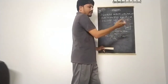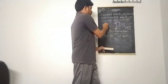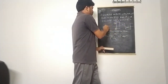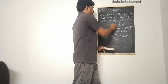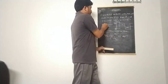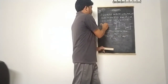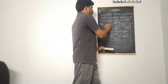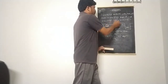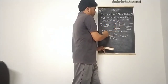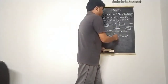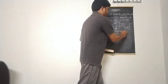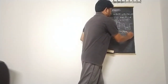When we have a bridge converter, the output VAB represents the AC system side. This is the converter output — a DC-to-AC conversion — and VAB is the AC voltage. We find the RMS value with respect to the peak value VDC.